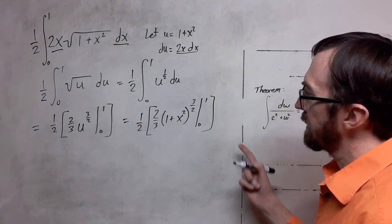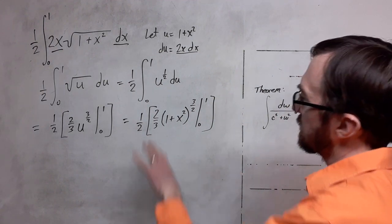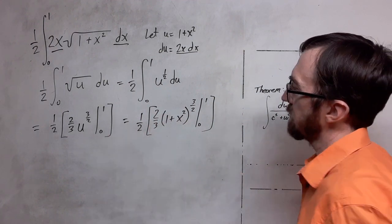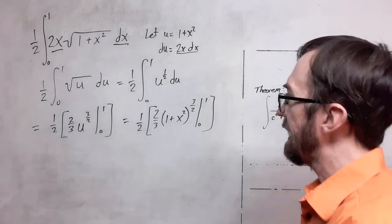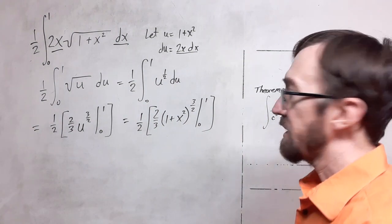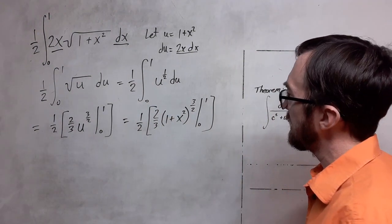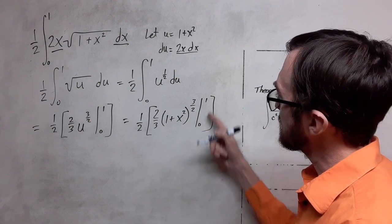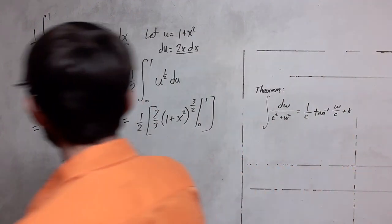One other thing you could do is pull this 2 thirds out and multiply it by the 1 half. That's going to be a nice simplification that gives us a third on the outside, and we can go ahead and substitute in our values here.